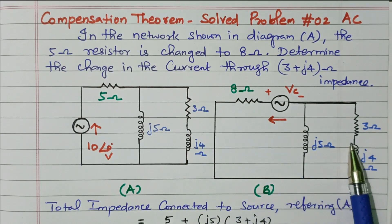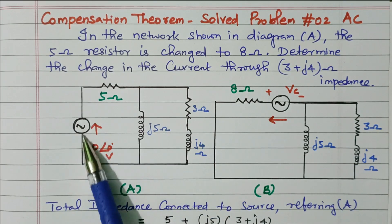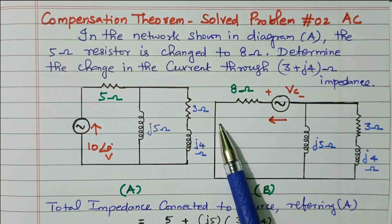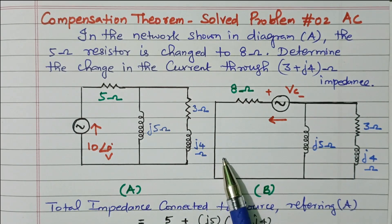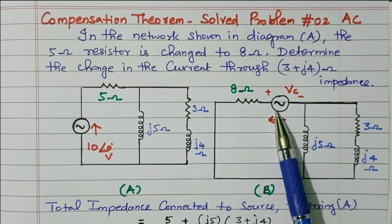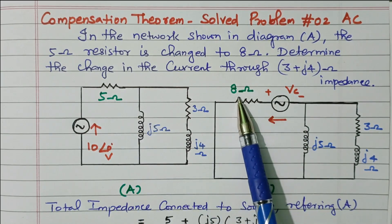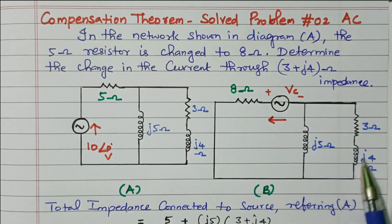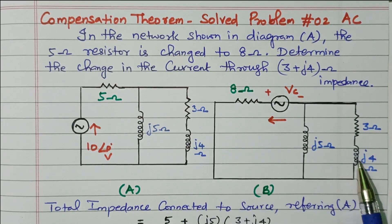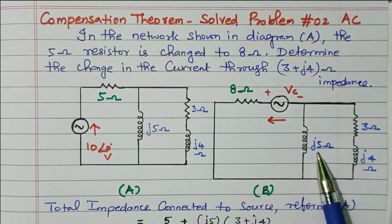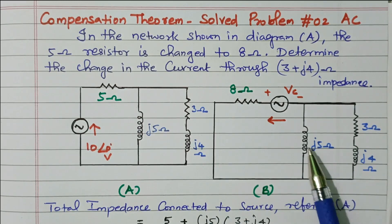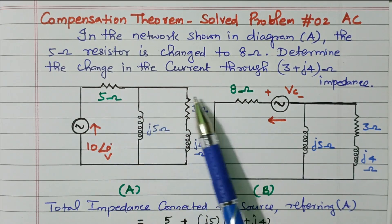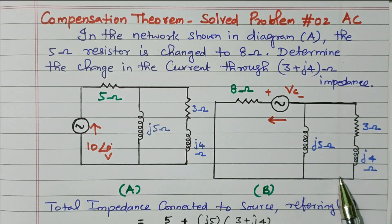While referring to network B, the original source is removed. If it is a voltage source, it is short-circuited; if it is a current source, it is open-circuited. Then we add the compensation voltage where the resistor was changed. The impedance in network B is very similar — 3 plus J4 in series, in parallel with J5, in series with 8 ohm. Here 5 ohm is changed to 8 ohm — that is the only change. This combination remains the same.